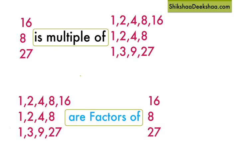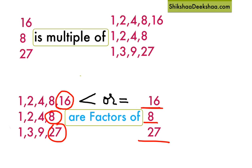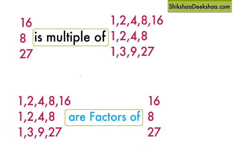You can also see that the biggest factor of a number is the number itself. For example, 1, 2, 4, and 8 are less than 16, and 16 is equal to 16. Similarly, 1, 2, 4 are less than 8, and 8 equals 8. So we say that the factors of a number are either less than or equal to the number.